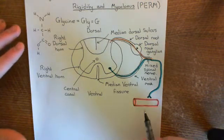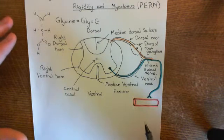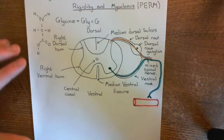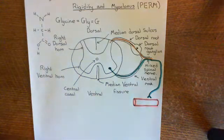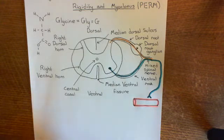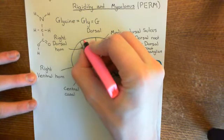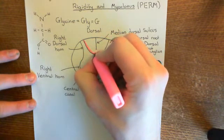We'll just go over a little bit more anatomy of the spinal cord to give you a nice complete picture, and then we'll talk about the role of the glycine receptors in the spinal cord. Let's talk about the white matter columns. Basically, you have three distinct white matter columns, or in fact three pairs of white matter columns.